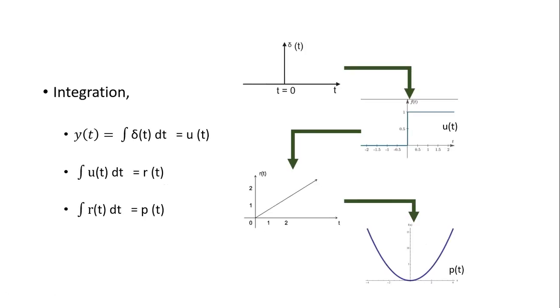The integration chain is the reverse of differentiation: integration of δ(t) gives u(t); integration of u(t) gives r(t), the ramp; and integration of r(t) gives the parabolic wave. These integral examples conclude Chapter 1. We have completed nine lectures in Chapter 1 — please revise it. If you have any doubt or need more examples, you can contact me and I will release additional examples.